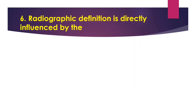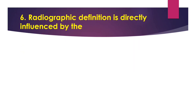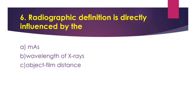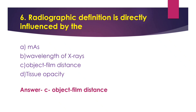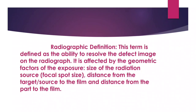Question number 6: Radiographic definition is directly influenced by - Option A - mAs. Option B - Wavelength of X-ray. Option C - Object film distance. Option D - Tissue opacity. The answer is Option C - Object film distance. Radiographic definition is defined as the ability to resolve different images on the radiograph.